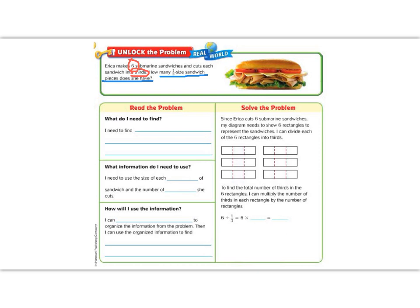So let's begin filling in our information. What do I need to find? Well, I just underlined it in blue. We need to find how many one-third-sized pieces she will have.